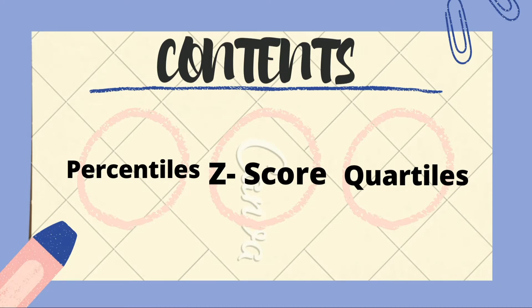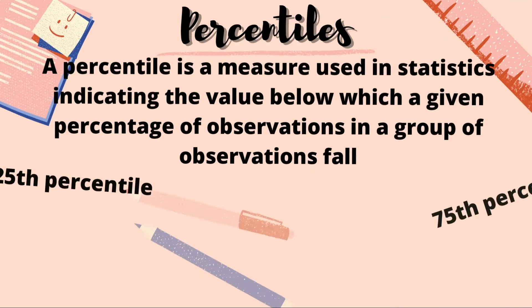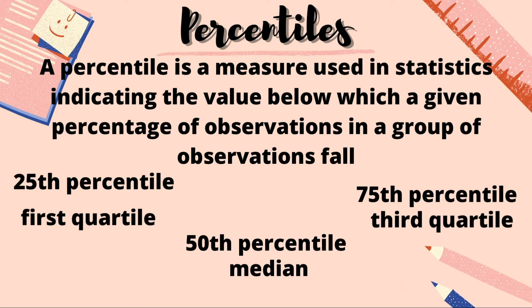Before we proceed to our main topic, let me give you a few information about percentiles and quartiles. A percentile is a measure used in statistics indicating the value below which a given percentage of observations in a group of observations fall. The 25th percentile is also called the first quartile, the 50th percentile means the median, and the 75th percentile is known as the third quartile.